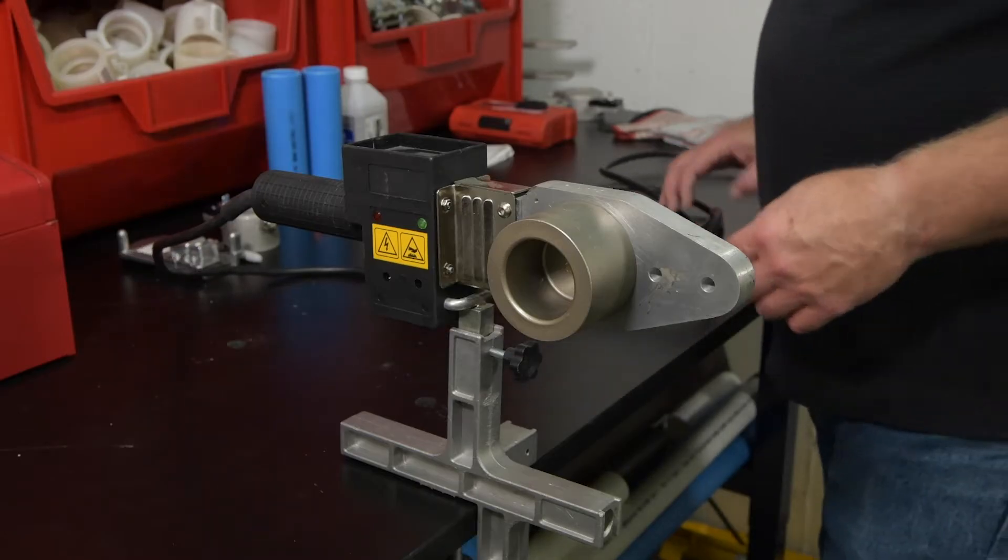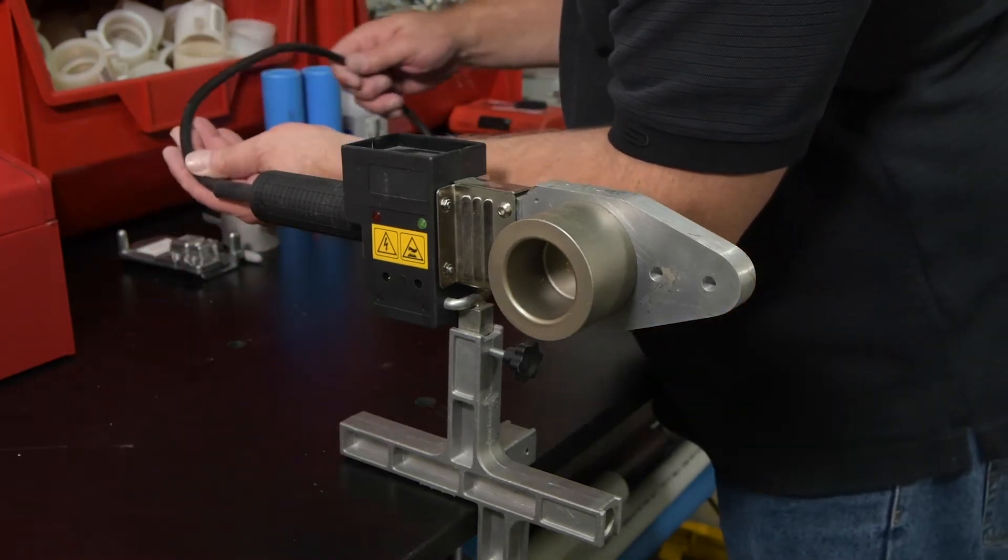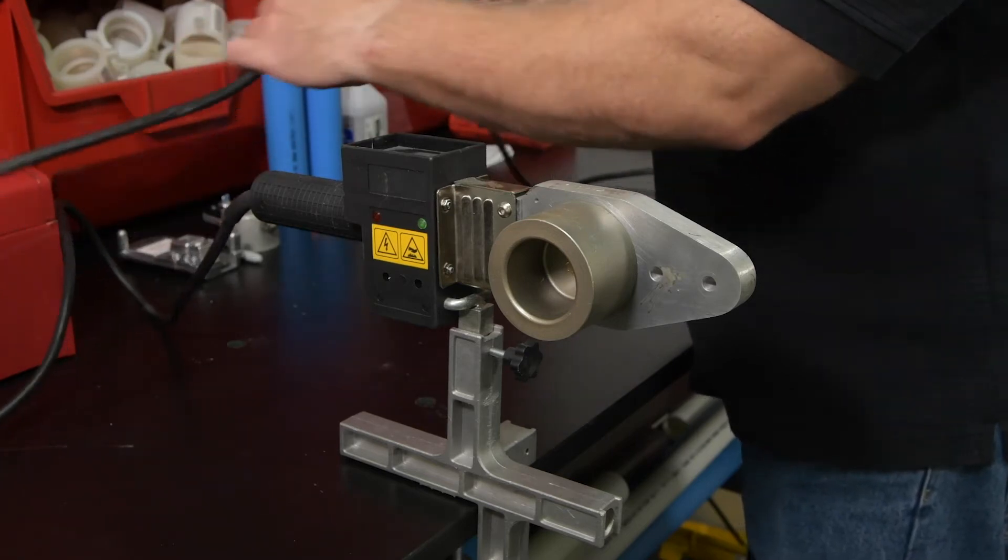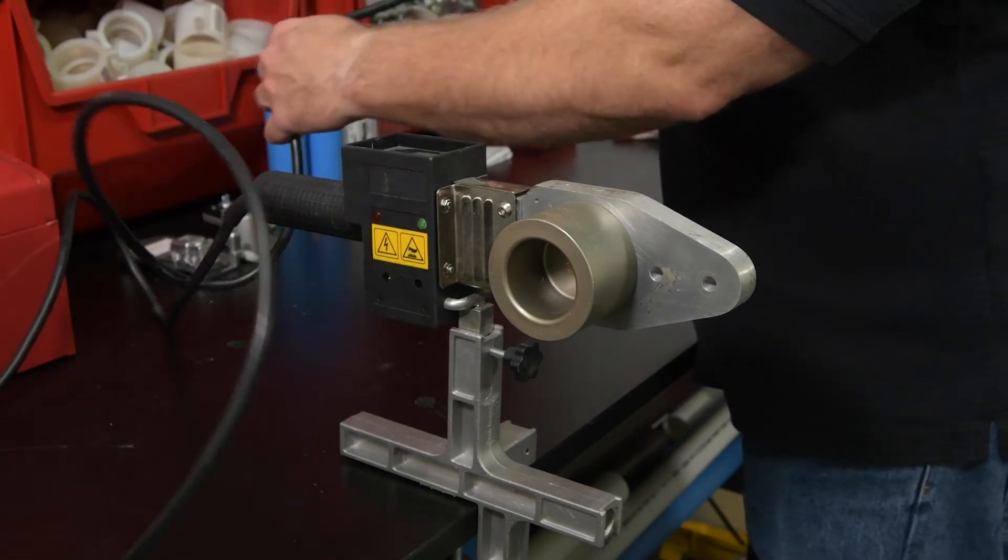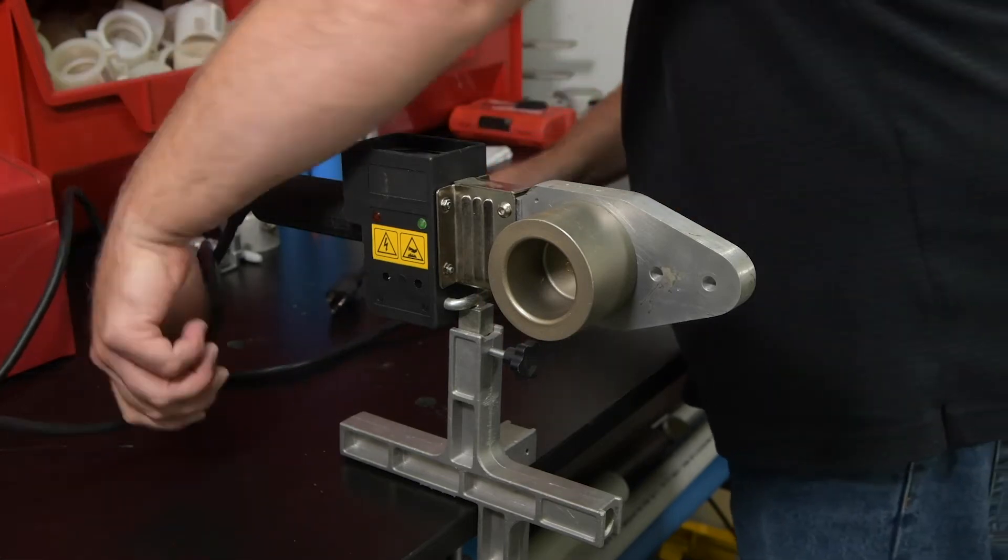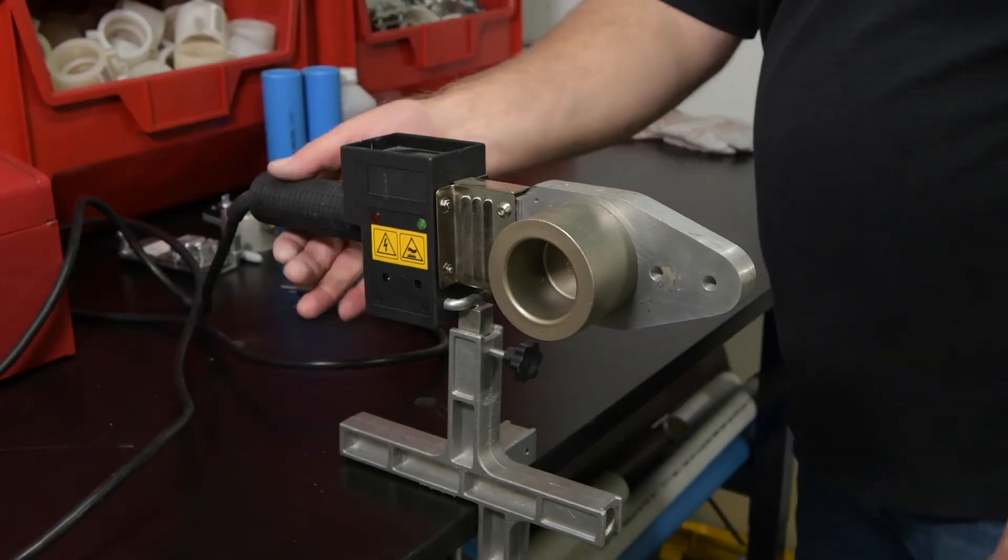Inspect the socket fusion tool for obvious signs of damage, especially the power cord and plug. Should the tool appear damaged, do not continue. Ensure the proper sized heads for your pipe and fittings, one male and one female, are attached. Mount the tool onto the stand provided or to a bench vise.